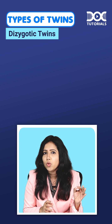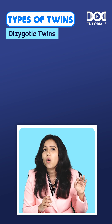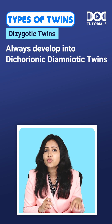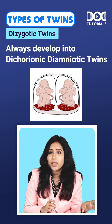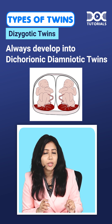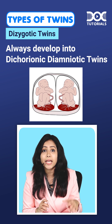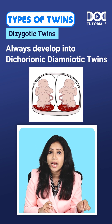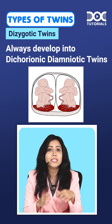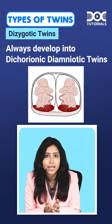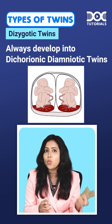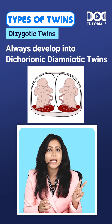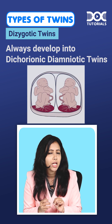The dizygotic twins will always give rise to dichorionic diamniotic pregnancy. Dichorionic means two placentae, and diamniotic means two amniotic sacs. So there are two amniotic sacs and two placentae.